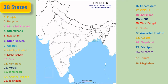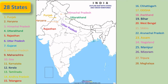Let us see the names of different states and their location on the India map. Starting from the north region: this is Punjab, this is Haryana, this is Himachal Pradesh, this is Uttarakhand, this is Rajasthan, this is Uttar Pradesh, this is Gujarat, this is Madhya Pradesh, this is Maharashtra. Below Maharashtra there is Goa, Karnataka, this is Kerala.